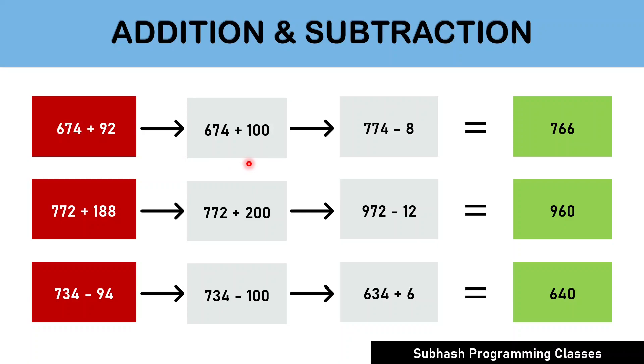Now, let me show you one more example. The calculation 772 plus 188 can be easily calculated as 772 plus 200 which is 972 and from this answer, you can subtract 12 which will give us the actual result as 960. Similarly, 734 minus 94 can be calculated mentally as 734 minus 100 which gives us 634 and then to 634 we can add 6 to make it 640 which will be our actual answer. Did you notice how converting numbers in terms of hundreds help our mind to solve problems easily?